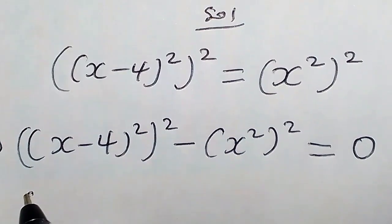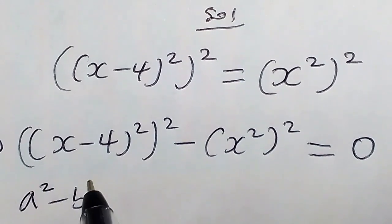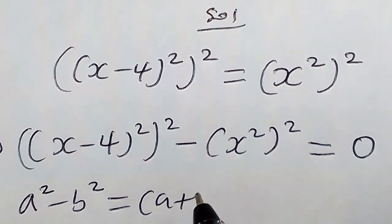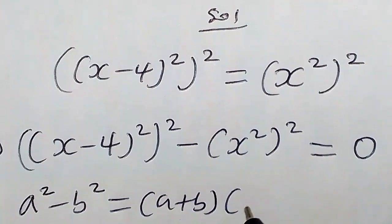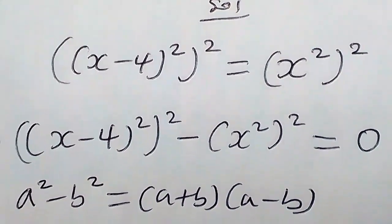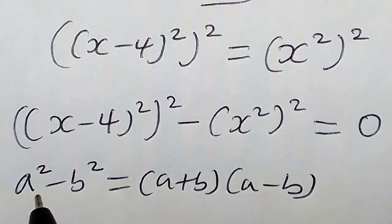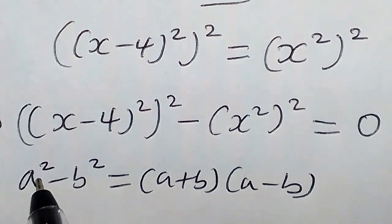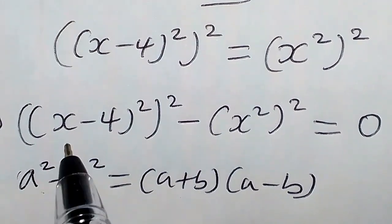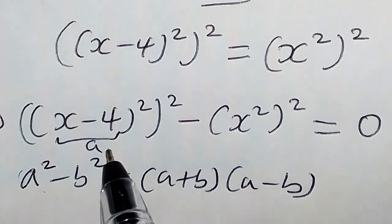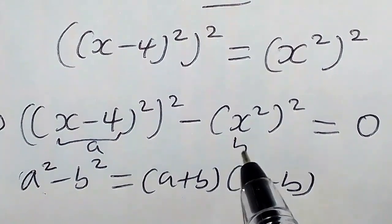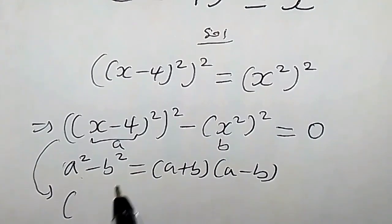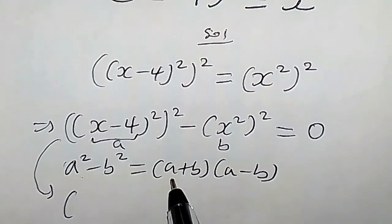Recall that whenever we have a squared minus b squared, this is the same as writing (a plus b)(a minus b) — that is the difference of two squares. We are going to apply this property here. In this case, a is (x minus 4) squared, and b is x squared.